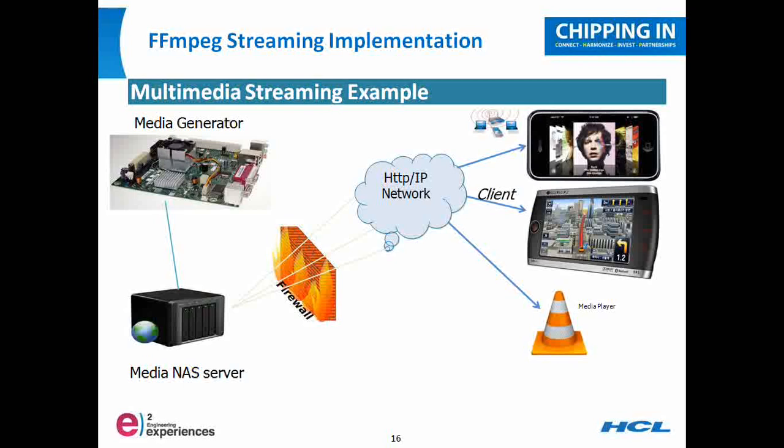This particular slide depicts an example of how multimedia streaming takes place. In this particular picture, there is a NAS box — basically it's a storage device. One can store the multimedia content on a NAS server. There could be multiple clients, like a cell phone, a tablet, or maybe a laptop, which is connected to this NAS device over the internet, maybe over HTTP protocol.